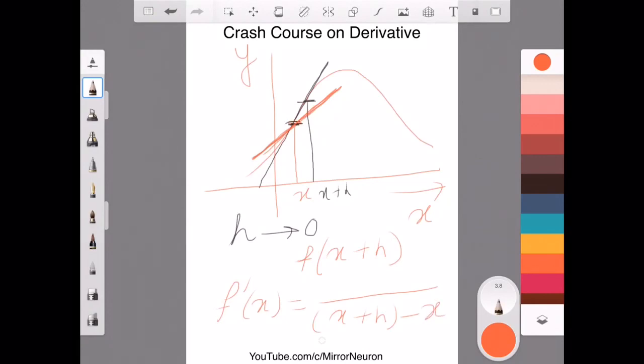So basically, what is the distance between these two points, and if I have moved from x to x plus h, then what is the change in my y direction. So it is nothing but x plus h minus f of x.